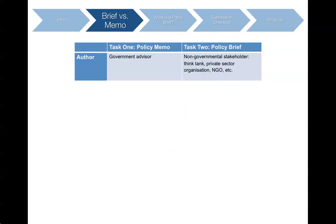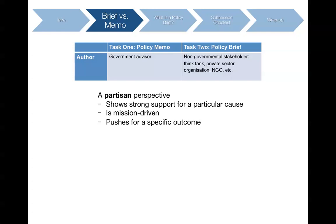So what's the difference between the Task 1 policy memo and the Task 2 policy brief? This useful table spells out all of the differences for you — you can also find it in the Task 2 writing guidelines. The first difference is the author. For the Task 1 policy memo, you had to write from the perspective of a government advisor. For Task 2, you now have to write from the perspective of a non-governmental stakeholder — for example, a think tank, a business, an NGO, a newspaper, and so on. This means you will be taking on a partisan perspective. Being partisan means you are a strong supporter of a particular cause. You have a mission, a vested interest in the issue, and you are lobbying for a specific outcome.